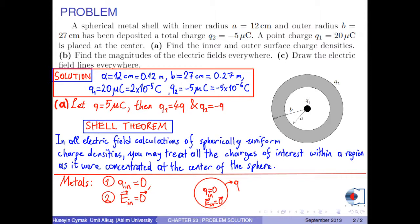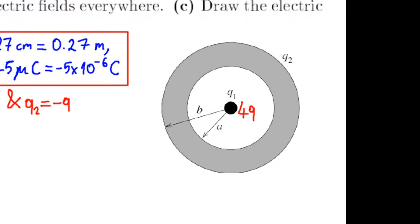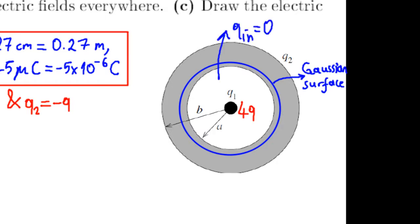Okay, let us solve the problem. Q1 is given as 4Q. Now, if we draw a Gaussian surface enclosing the inner surface of the metal, according to the Shell theorem, the charge inside this metal is zero. Therefore, the charge on the inner surface becomes negative 4Q.